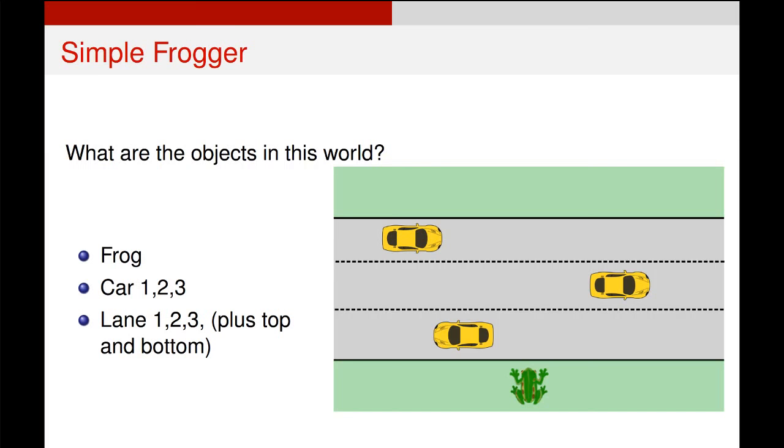What we can immediately see from listing what we see on that diagram is that there are groups of objects already. There are groups of cars—there are three of them. There's only one frog, and there's at least three, possibly five lanes, if we include a lane at the top, a grassy strip at the top, and a lane at the bottom where the frog starts.